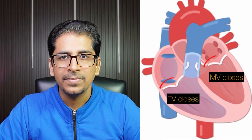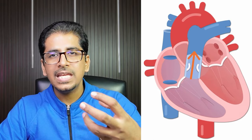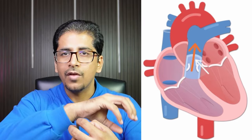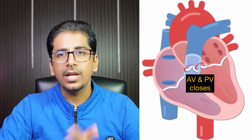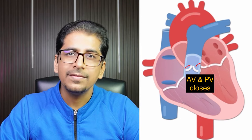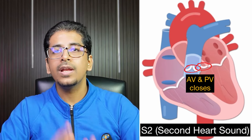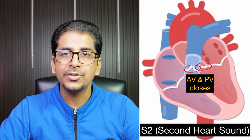As the ventricle keeps contracting and pushing blood from the left ventricle to the aorta and from the right ventricle to the pulmonary artery, once it has finished, the aortic valve and pulmonic valve close, giving us the second heart sound, S2. Let's hear how S1 and S2 are heard.